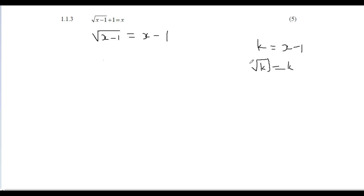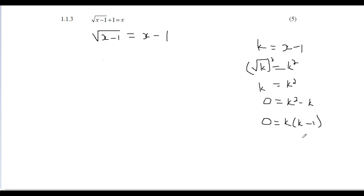Substituting k = x - 1, we get √k = k. Squaring both sides gives k = k². Rearranging: 0 = k² - k. Taking out a common factor of k: 0 = k(k - 1). This is the same structure as our first problem. Now we substitute k back as (x - 1): 0 = (x - 1)(x - 1 - 1), which simplifies to 0 = (x - 1)(x - 2).